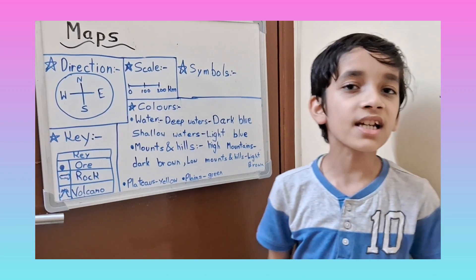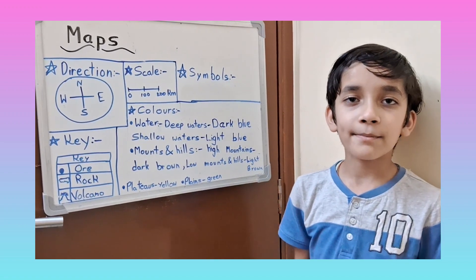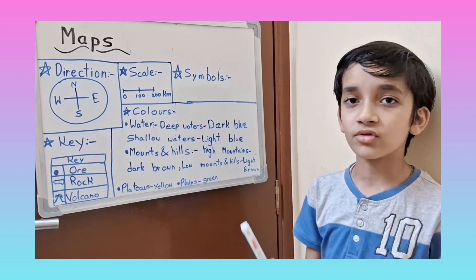Next, the key. The key is like a reference of the map, showing the symbols or colors used in maps.